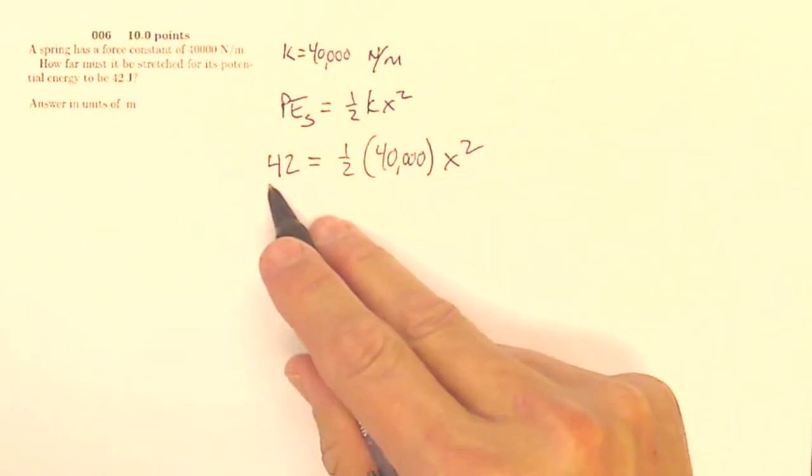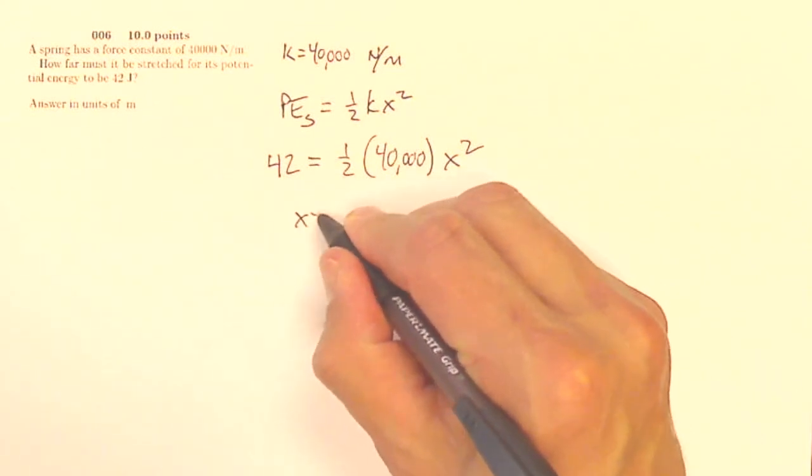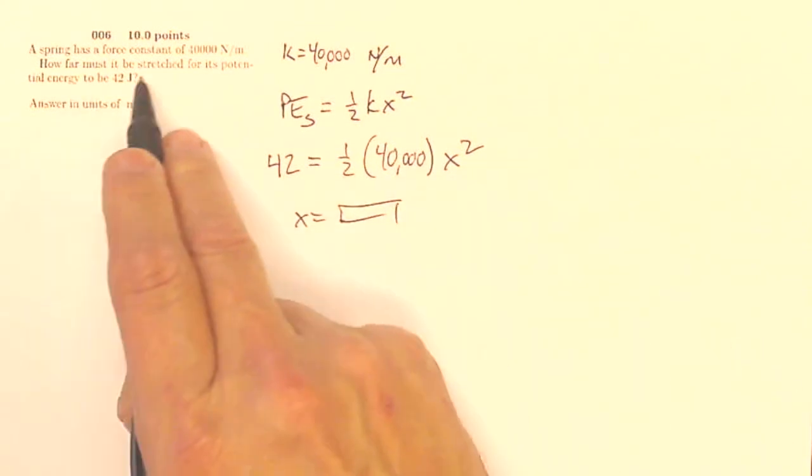So if I multiply by 2, divide by 40,000, square root, I'm going to get a nice small x in units of meters. So x equals and that is your how far must it be stretched.